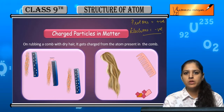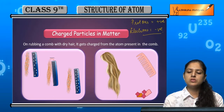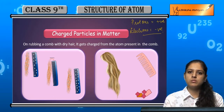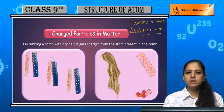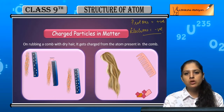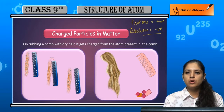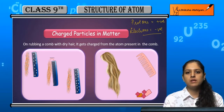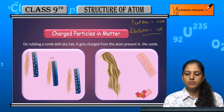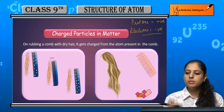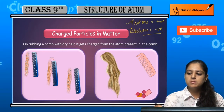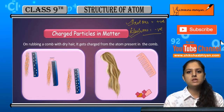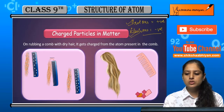So that means matter contains protons and electrons. Matter can behave as a charged particle because of protons and electrons — protons have charge and electrons also have charge.